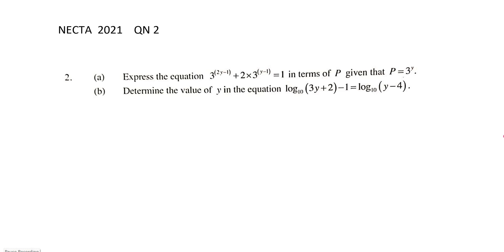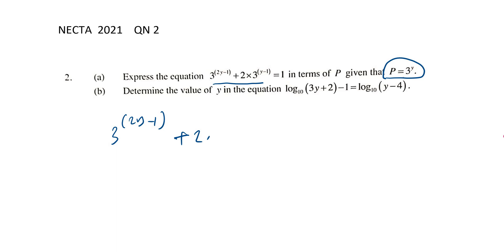Today we are going to continue with question number two. So question number two in Nectar 2021 — express the given equation in terms of P, given that P is 3^y. So we have 3^(2y−1) + 2 × 3^(y−1) = 1.